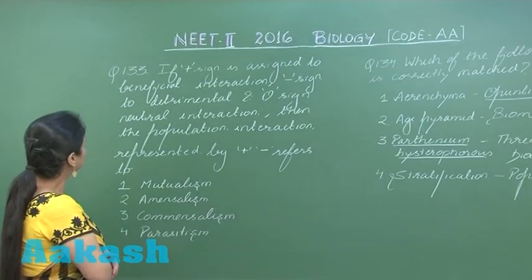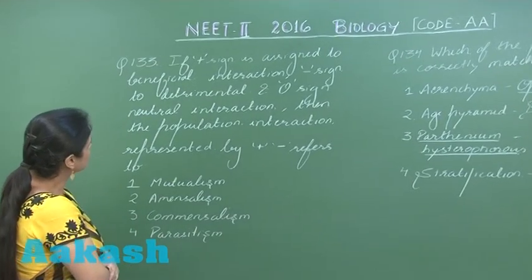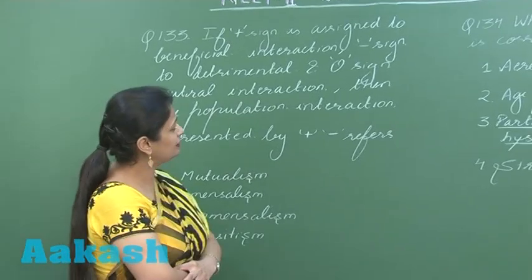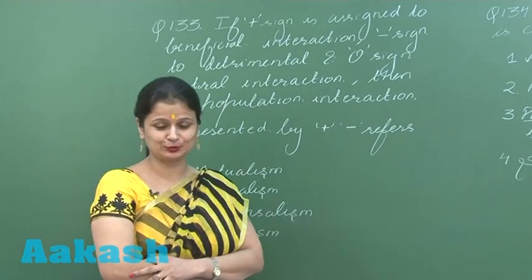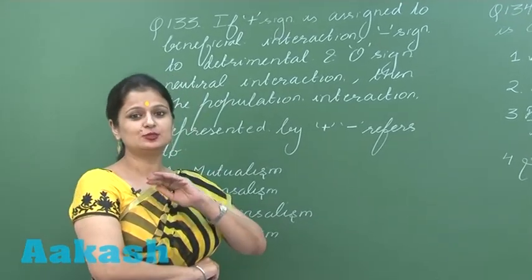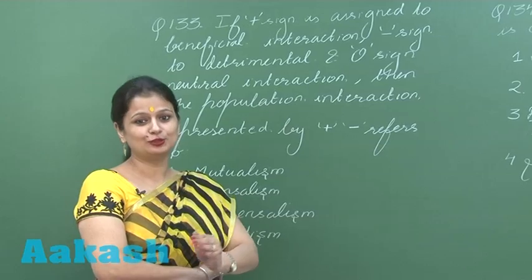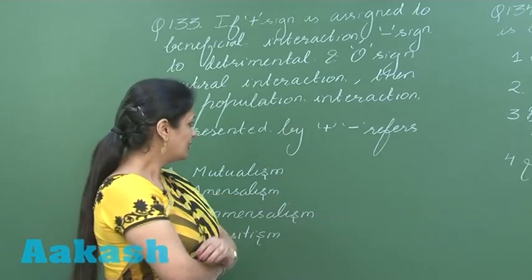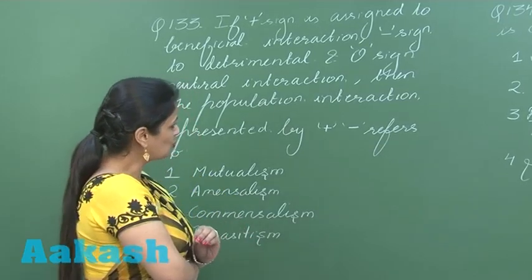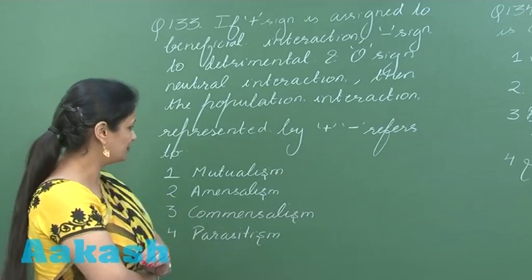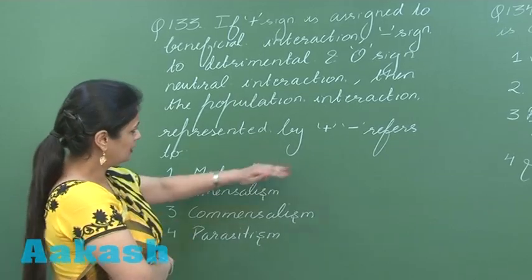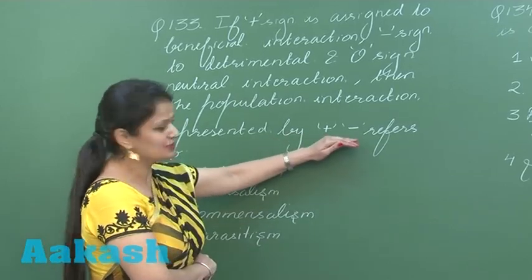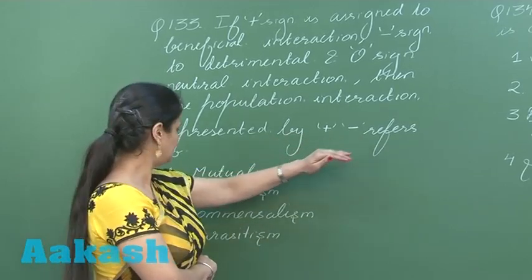Question number 133 is related to the interaction between different species — a very important topic in ecology. Every year, one question comes from this topic. When we say plus-minus interaction, we look for the best-matching option.